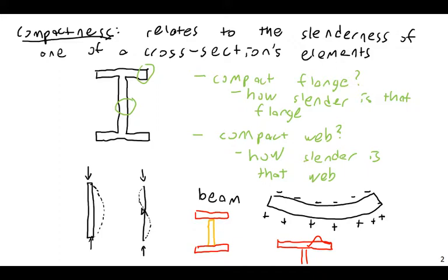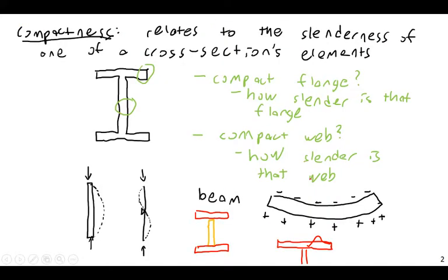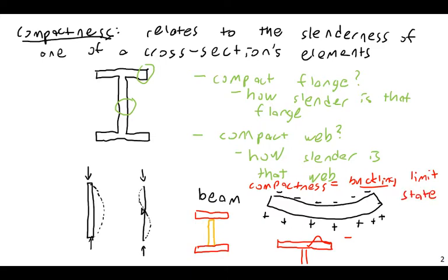Based on this, we need a way to classify sections as compact, non-compact, or slender. When Chapter F says 'doubly symmetric, compact, I-shaped members,' they're talking about W-sections or C-channels that pass certain compactness requirements for flanges and webs. Compactness is fundamentally a buckling limit state — that's the key thing to remember.